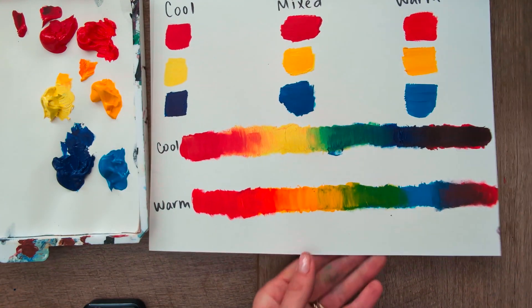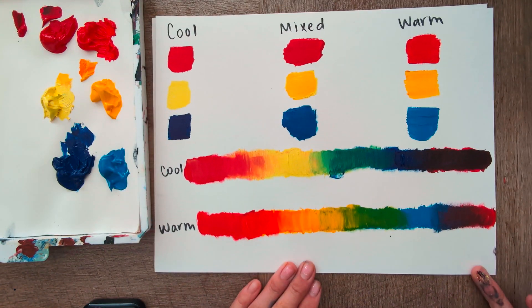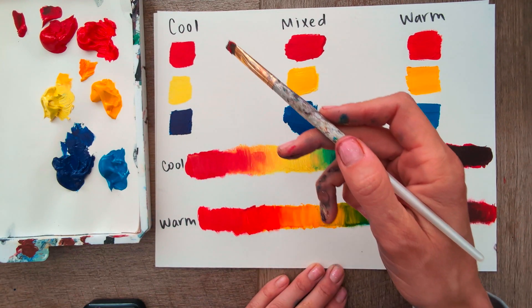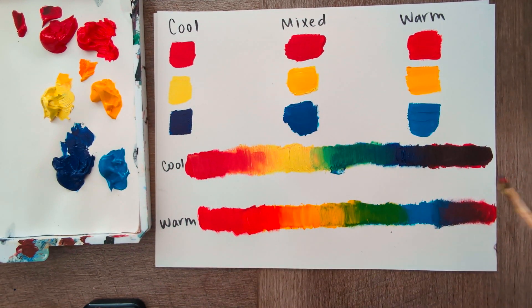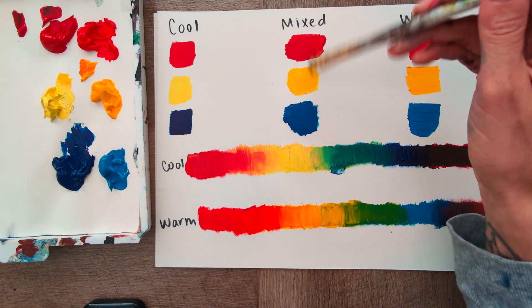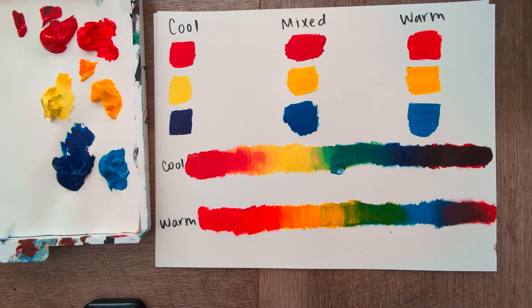So there you go. That's just a quick little, I mean, it wasn't that quick. Sorry. I kind of talked a lot, but I think this is a good example of cool versus warm. Maybe in a different video, I'll just do like a plain, normal, mixed, neutral, primary color spectrum. But yeah, that's all I have. Thank you.